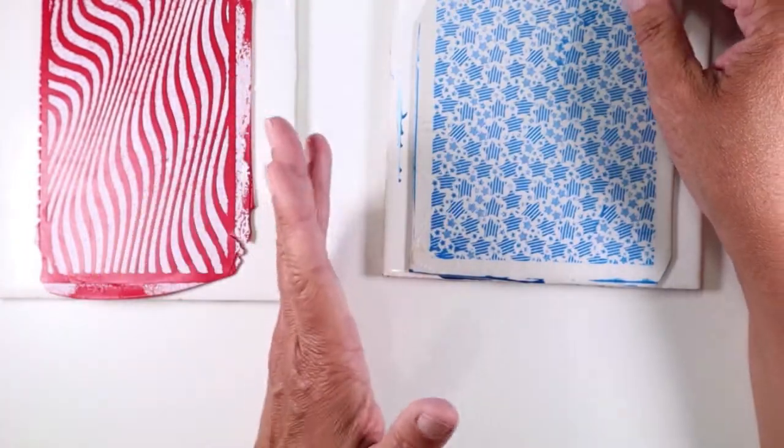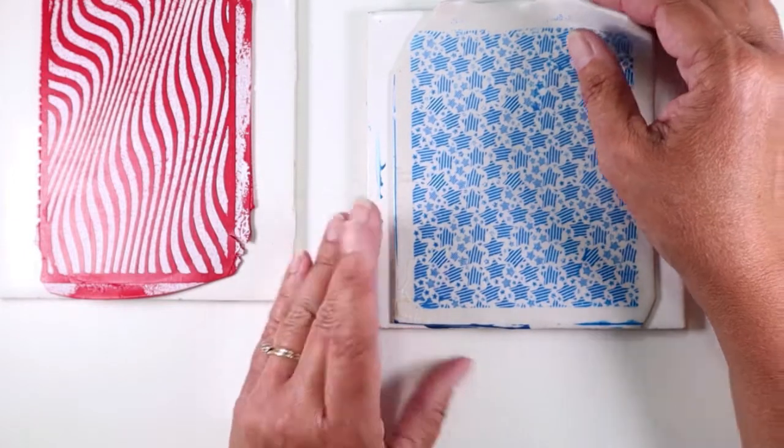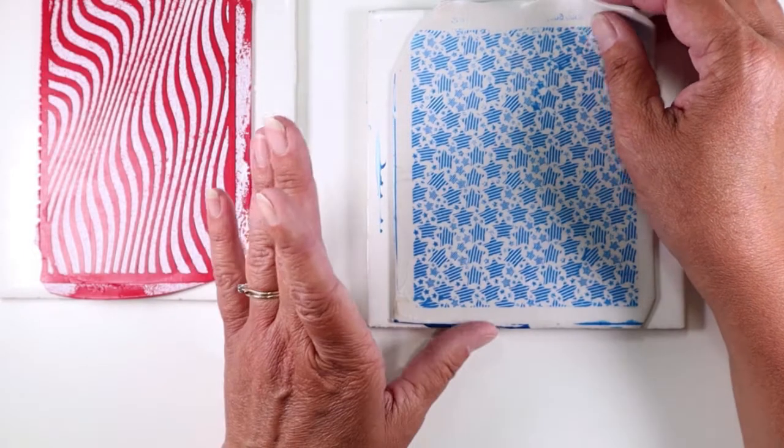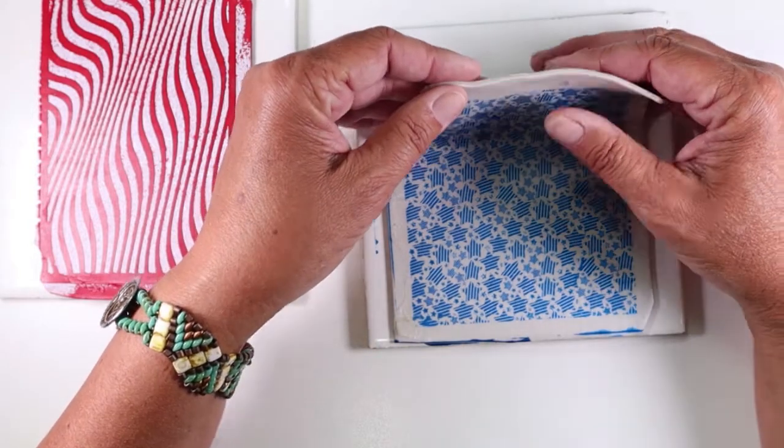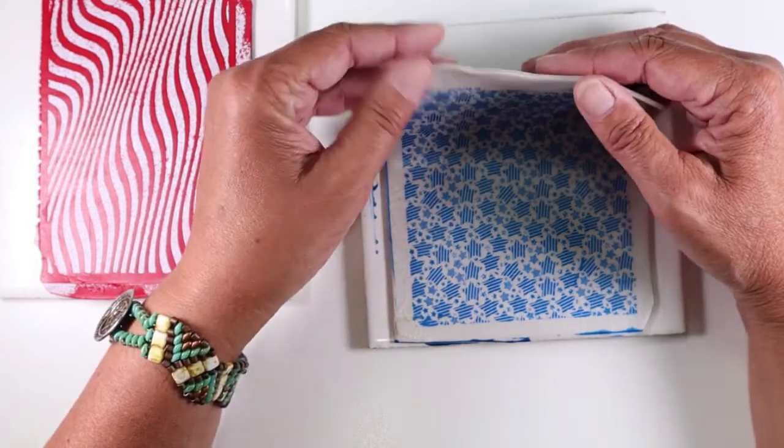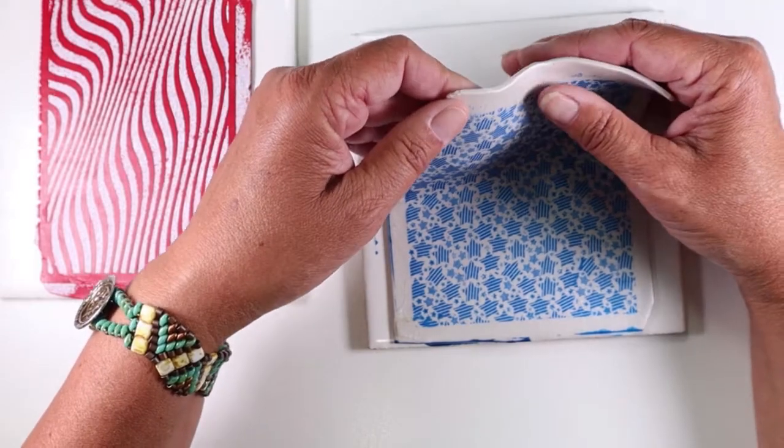As long as you don't mind a little bit of crackling in your paint and maybe the teeny tiniest bit of distortion in your design you can take this sheet that was rolled out on a number two setting the second thickest and roll it down to a thinner setting.